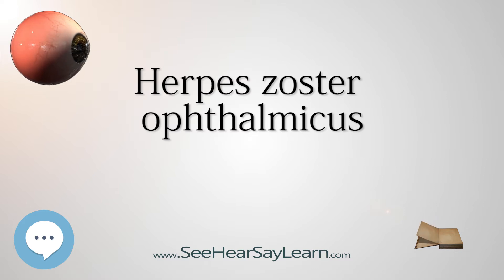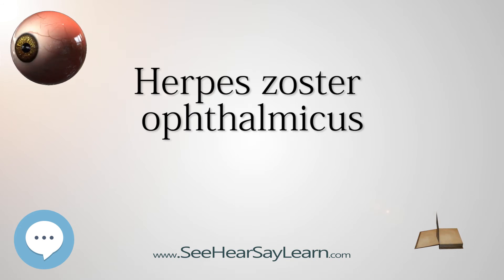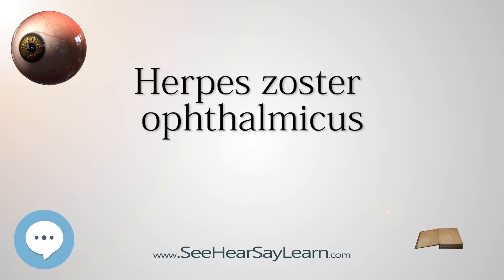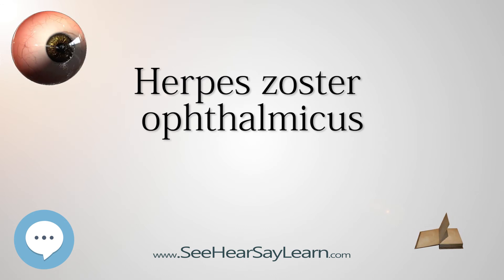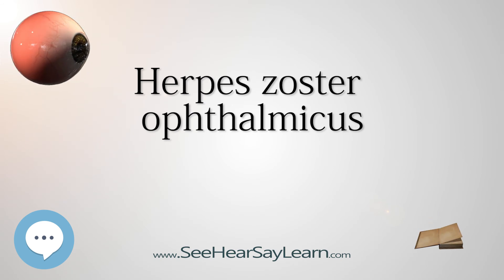Anterior uveitis develops in 40–50% of cases with HZO within 2 weeks of onset of the skin rashes. Typical HZO keratitis involves at least mild iritis, especially if Hutchinson's sign is positive. This non-granulomatous iridocyclitis is associated with small keratic precipitates, mild aqueous flare, and occasionally hemorrhagic hypopyon. HZO uveitis complications such as iris atrophy and secondary glaucoma are not uncommon, and complicated cataract may develop in late stages.